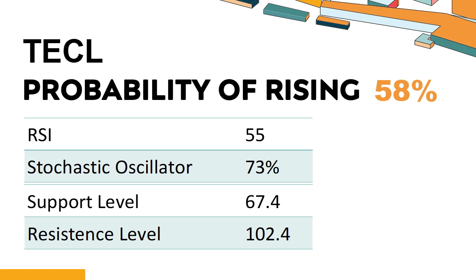Trend Outlook: The probability of TECL's share price rising is 58%. When the probability of rising is higher than 50%, the stock has a higher chance of rising. Combining multiple technical analysis indicators, TECL has four bullish signals and four bearish signals. TECL's short-term support level is 77.4. If it falls below 77.4 during this session, it will have a chance to test 67.4.